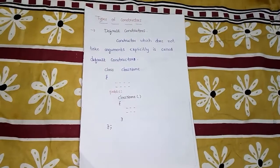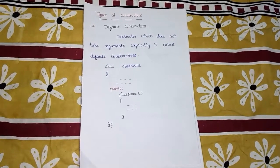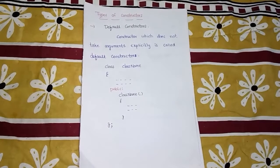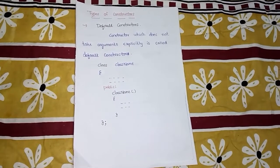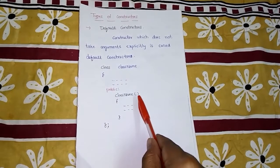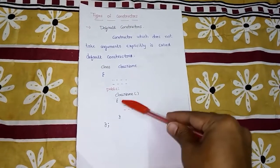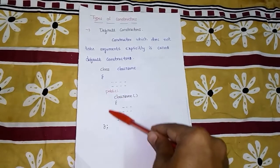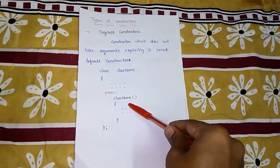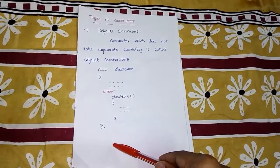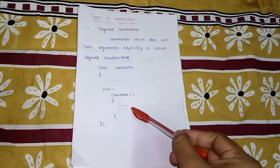Constructors are of three types: default constructor, parameterized constructor, and copy constructor. A default constructor is one that does not take any arguments. The arguments are written within the parentheses. Since it has the same name as the class and no arguments inside the parentheses, this is our default constructor. It can be defined inside the class with no need to declare it again outside.